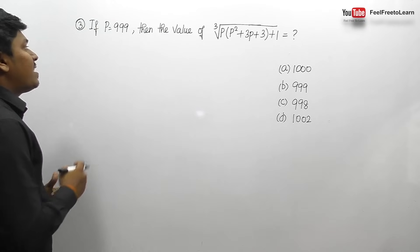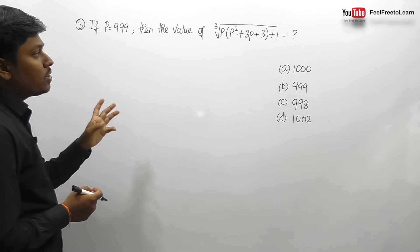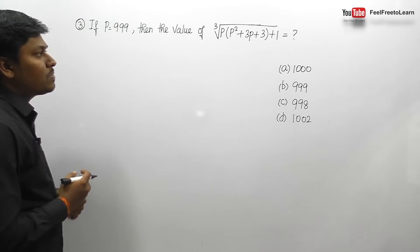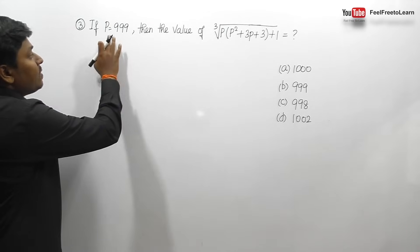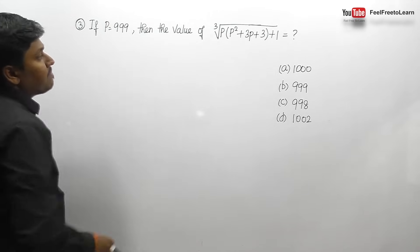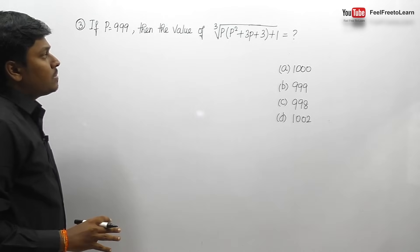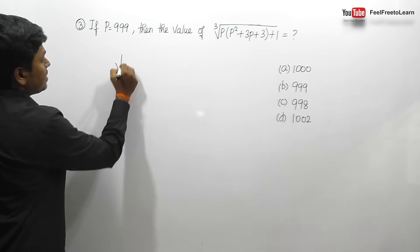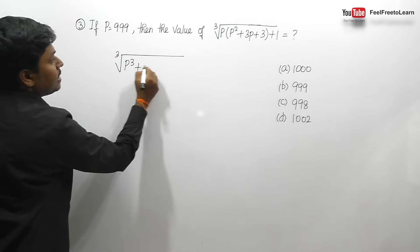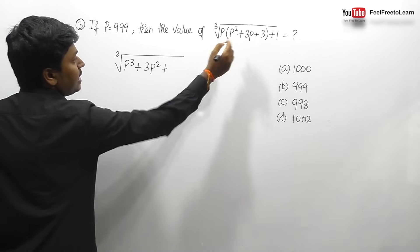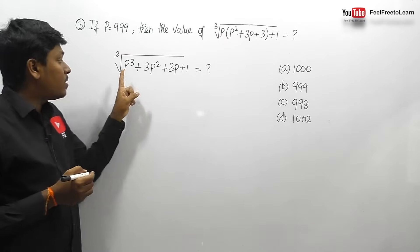Question number 3: if p equals 999, find the value of the cube root of p(p² + 3p + 3) + 1. Substituting p=999 directly would be lengthy, so let's simplify. Expanding inside: p times p² is p³, and 3p times p is 3p², and 3 times p is 3p, plus 1.